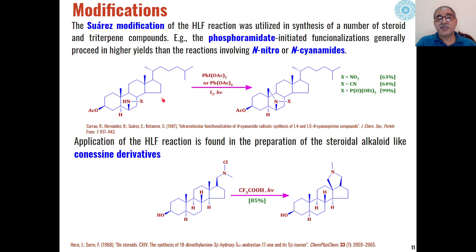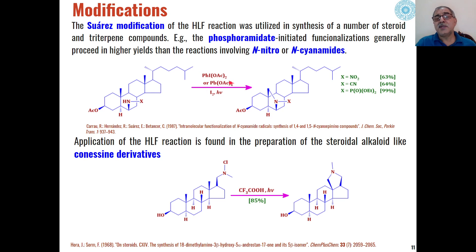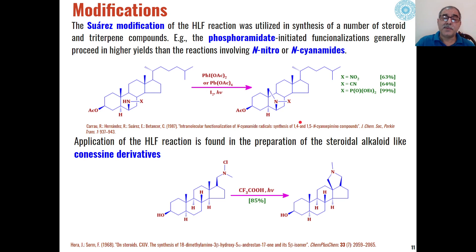Another example of Suárez modification is in the case of steroids and triterpenoid compounds. When these are reacted with phosphoramidate esters with phenyl iodide acetate or lead acetate in the presence of iodine under photochemical conditions, cyclic amines — pyrrolidines — are found as the product. The HLF reaction is also used for the preparation of steroid alkaloids like onisine derivatives; the mechanism is the same, where N-chloro derivatives undergo cyclization to give the pyrrolidine ring as the product.